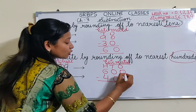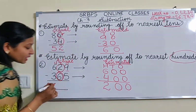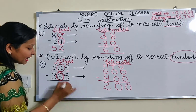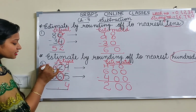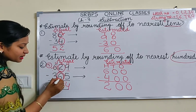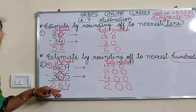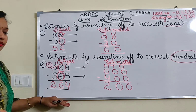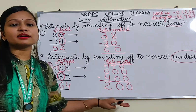Now we subtract: 0 minus 0 is 0, 0 minus 0 is 0, and 6 minus 4 is 2. So the estimated difference is 200. For the actual difference: 9 minus 5 is 4, then 2 minus 6 we cannot do, so 6 becomes 5 and 2 becomes 12. 12 minus 6 is 6, and 5 minus 3 is 2. So our actual difference is 264 and the estimated difference is 200.